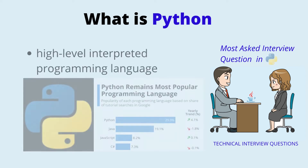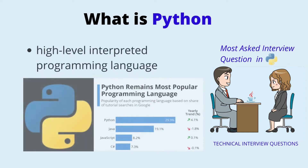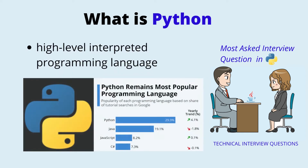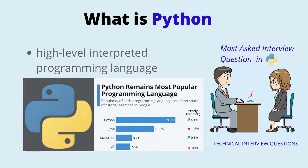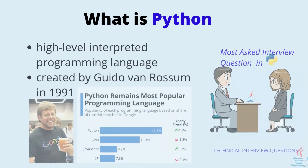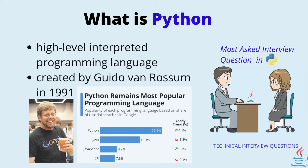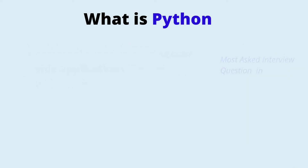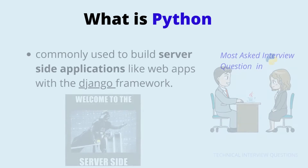Python is a high-level interpreted programming language. It is the most popular language in the world because it is easy to learn. It was created by Guido Van Rossum in 1991.